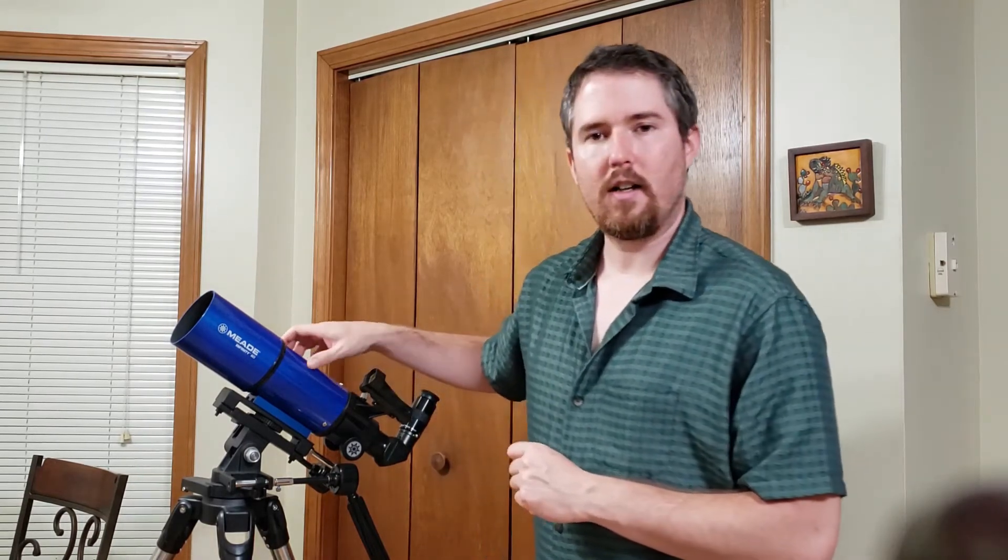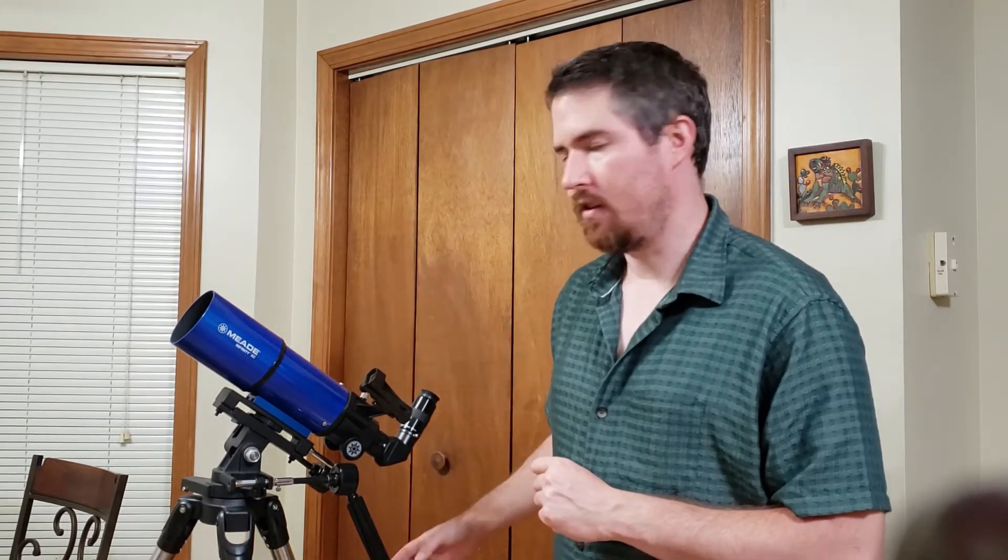With the 400 millimeter focal length, it's not really ideal for the planets. It's great for large objects like the moon and things like that, but we'll still look at the planets real quickly with this and just see what we can see.